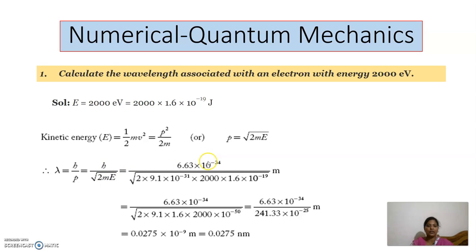h is Planck's constant, m is the mass of the electron, and E is given as 2000 into 1.6 into 10 power minus 19. Substituting all the values, we get the answer as 0.0275 into 10 power minus 9 meters, or equivalently 0.0275 nanometers.